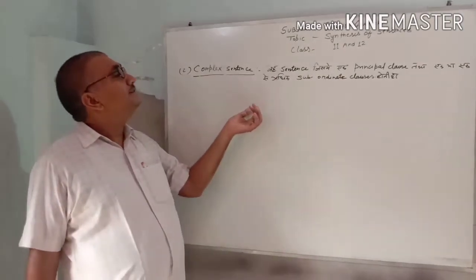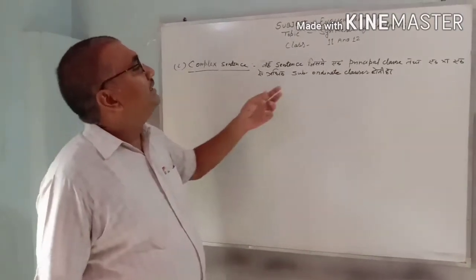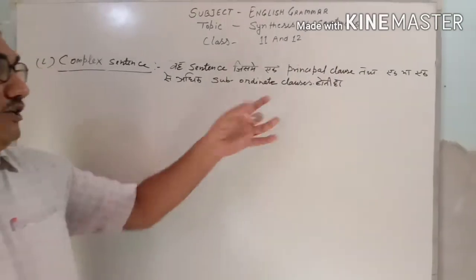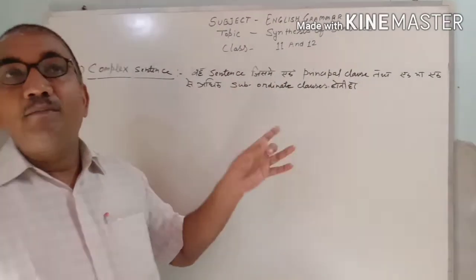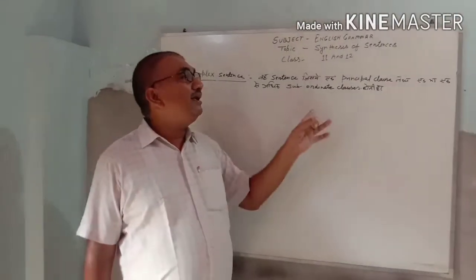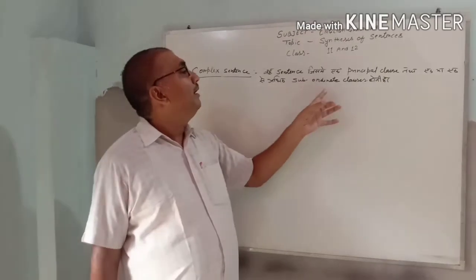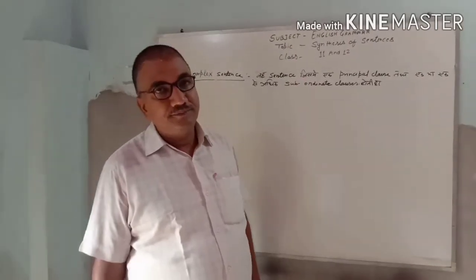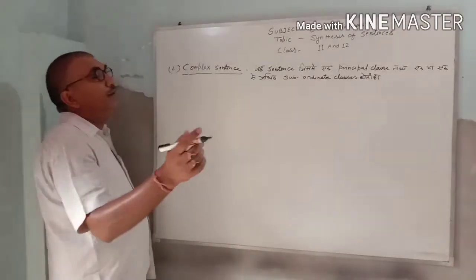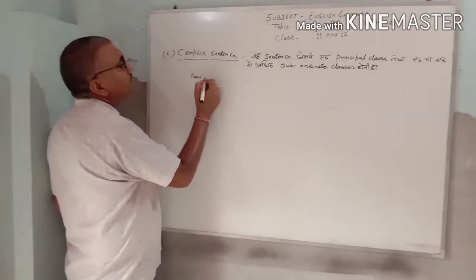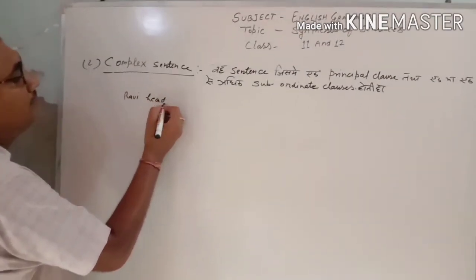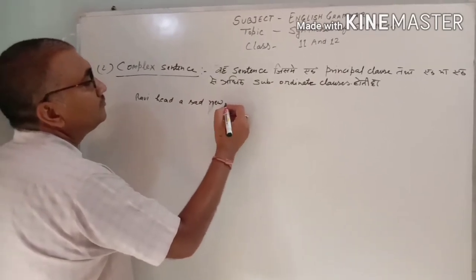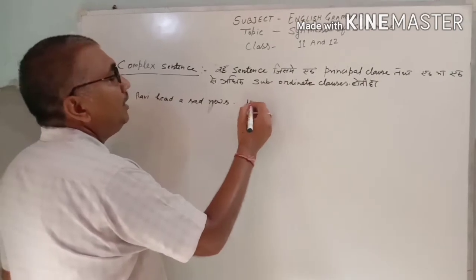The next type is the complex sentence. In a complex sentence, there is a principal clause. The principal clause is complete and clear. When there is a subordinate clause, it depends on the principal clause. For example: 'He heard a sad news.' 'He began to cry.'